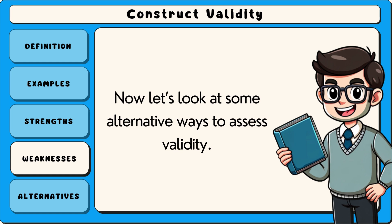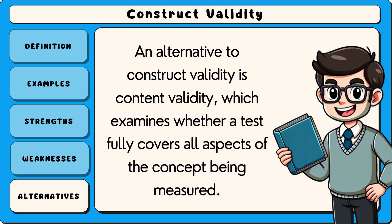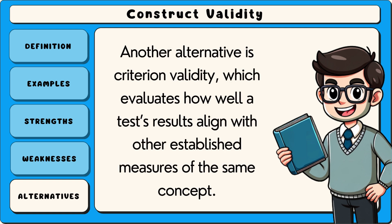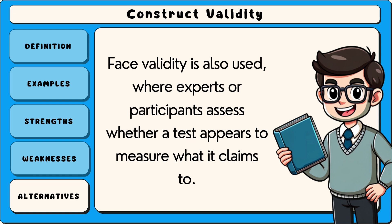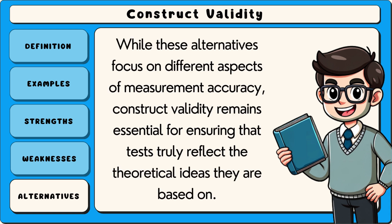Now let's look at some alternative ways to assess validity. An alternative to construct validity is content validity, which examines whether a test fully covers all aspects of the concept being measured. Another alternative is criterion validity, which evaluates how well a test's results align with other established measures of the same concept. Face validity is also used, where experts or participants assess whether a test appears to measure what it claims to. While these alternatives focus on different aspects of measurement accuracy, construct validity remains essential for ensuring that tests truly reflect the theoretical ideas they are based on.